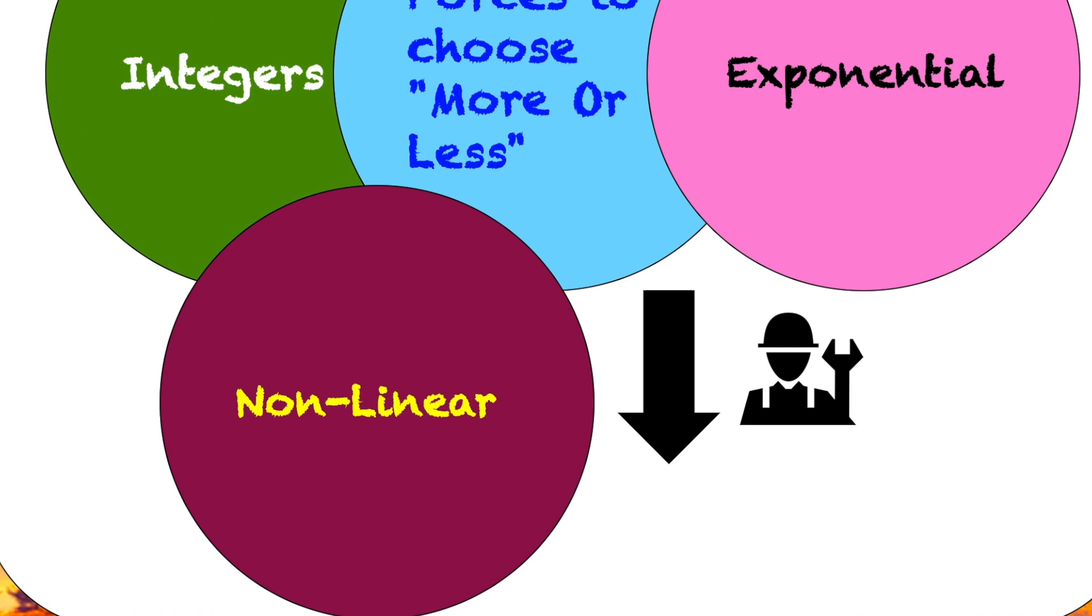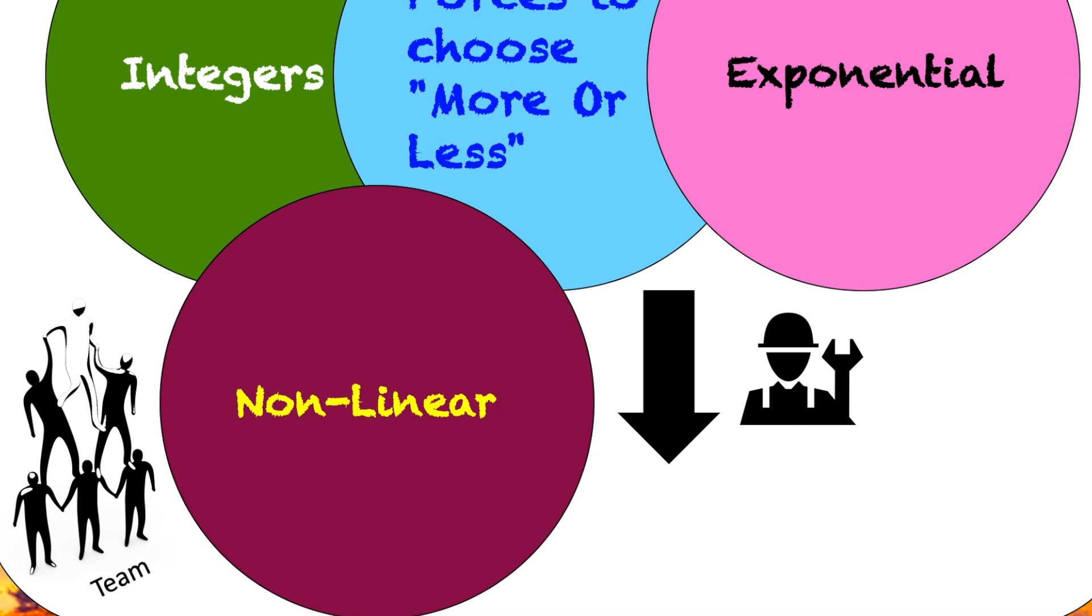Just imagine your scrum master and everyone in your team agreed to use an even number system instead of Fibonacci numbers like 2, 4, 6, 8, 10, maybe up to 20. 2 is the smaller story point and 20 is the larger story point with respect to complexity.